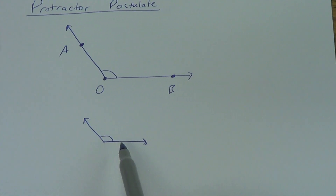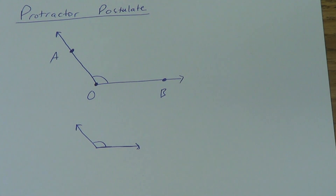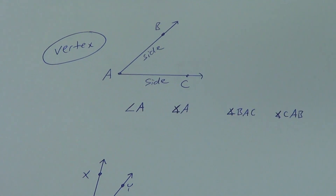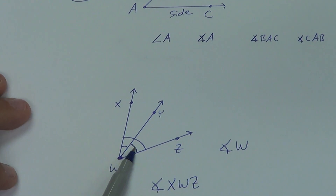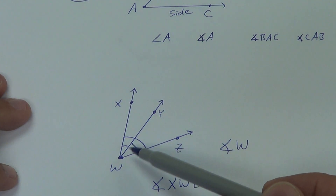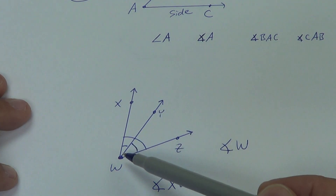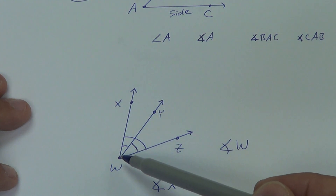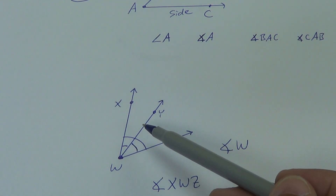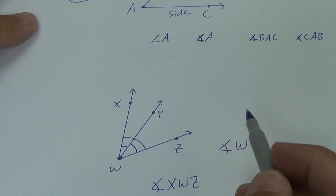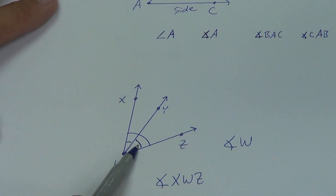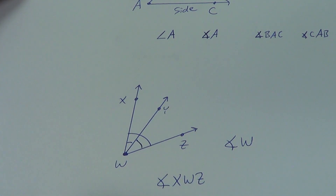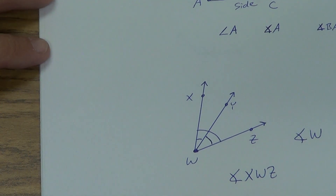Next, angle addition postulate. Going back to that previous picture — see how there are a couple of angles next to each other? They share this ray right here. Angle X, W, Y is one angle, and angle Z, W, Y is the other. They're right next to each other — they don't overlap, there's no gap between them. What we can do is add the two smaller angles together to get the big angle. That's all the angle addition postulate says.